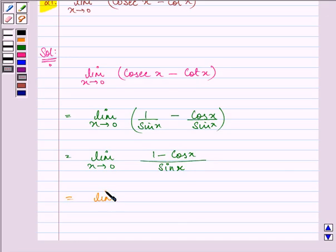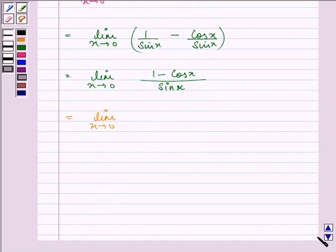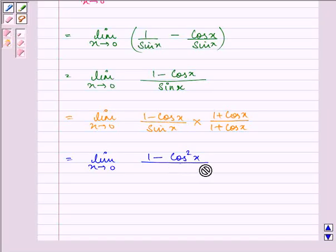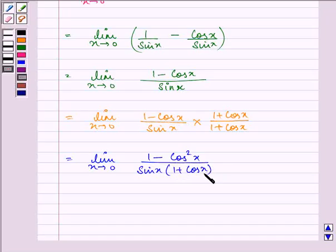Further, we have limit x approaches 0. On rationalizing the numerator, we have 1 minus cos x over sin x and multiplying the numerator and denominator with 1 plus cos x, we have 1 minus cos²x divided by sin x multiplied by 1 plus cos x.